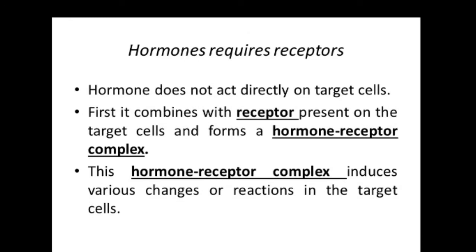Hormones require a receptor for them to act. A receptor is a biological transducer that converts the chemical signal in the hormone into a physiological response. When a hormone binds to a receptor, we call it a hormone receptor complex or a ligand receptor complex, which induces various changes or reactions in the target cells — a process called transduction.